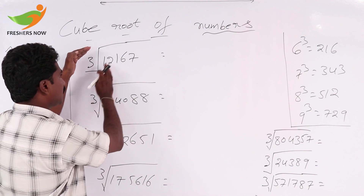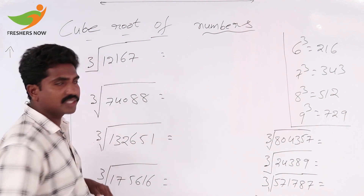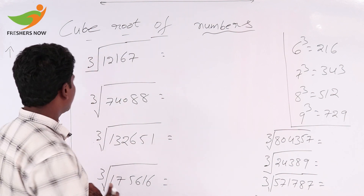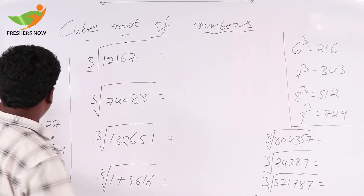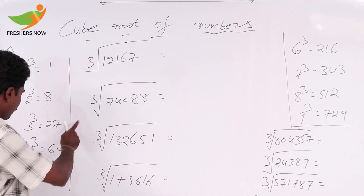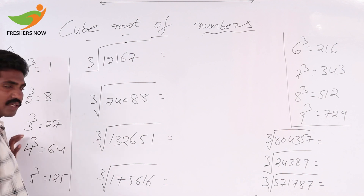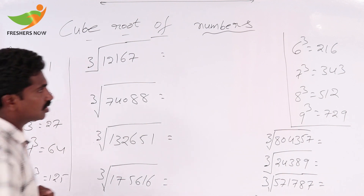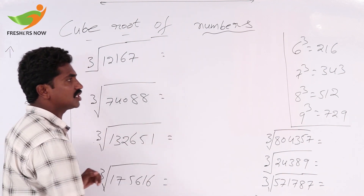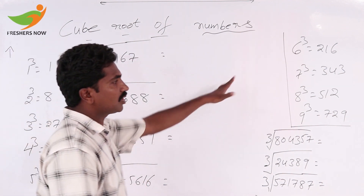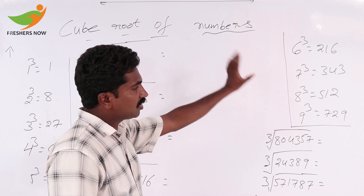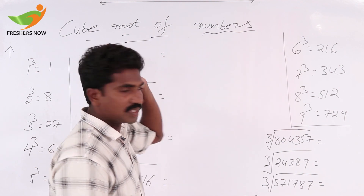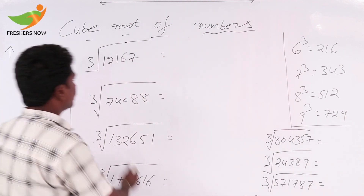If we take cube roots of 1 to 9: 1 cube is 1, 2 cube is 8, 3 cube is 27, 4 cube is 64, 5 cube is 125, 6 cube is 216, 7 cube is 343, 8 cube is 512, 9 cube is 729.